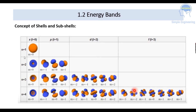Rule 3 is Hund's rule: the most stable arrangement of electrons in a subshell is when the maximum number of unpaired electrons exist, each possessing the same spin direction. So when n=1 you have only the S orbital; when n=2 you have S and P; when n=3 you have S, P, D; and when n=4 you have S, P, D, and F. That covers shells and subshells.